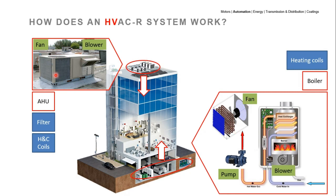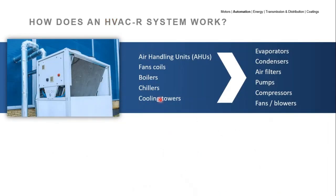HVAC systems are comprised of some main units: the air handling unit, fan coils, boilers, chillers, and cooling towers. In some cases some of them, in others maybe all of them. These main components are also comprised of subcomponents: evaporators, condensers, air filters, pumps, compressors, fans, and blowers. You may have some or all of them.